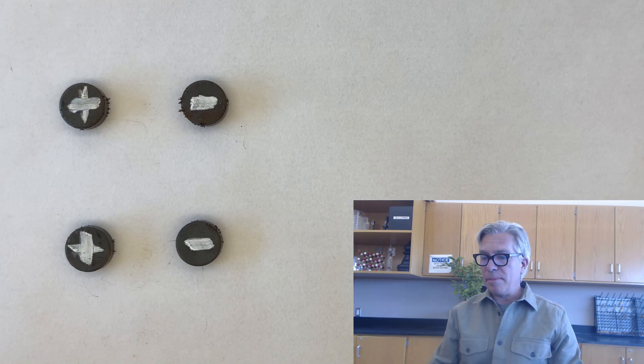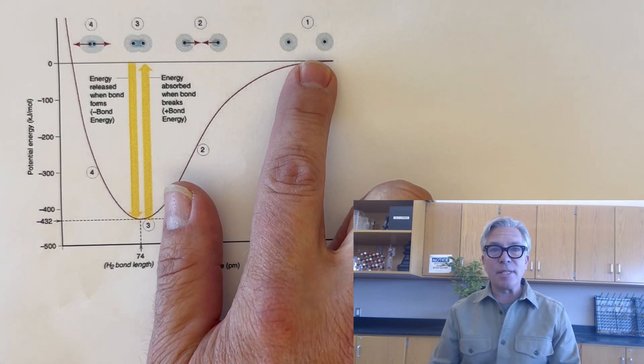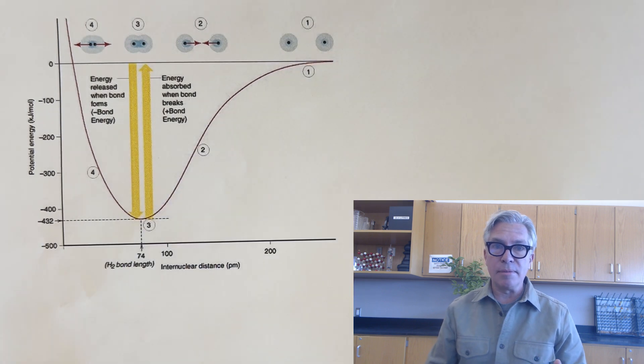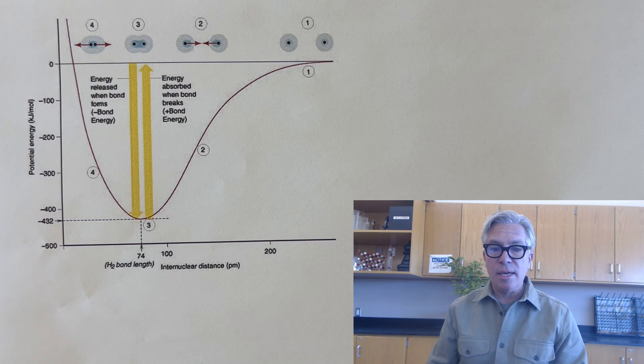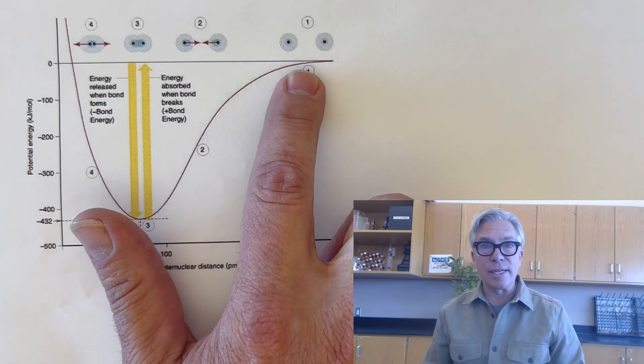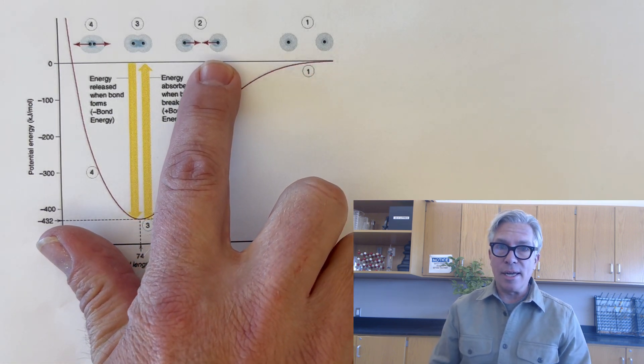Hi everyone and welcome to this episode. Today we're talking about chemical bonding and specifically the potential energy diagram that describes chemical bonding. Sometimes they're called Morse potential energy diagrams and if you're taking AP chemistry you're very likely to see them early and often.